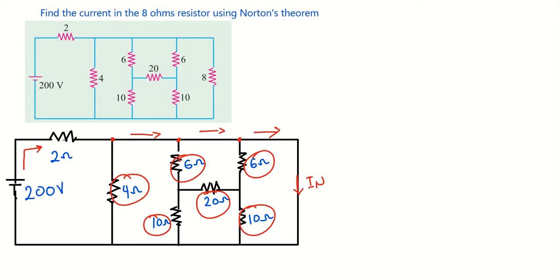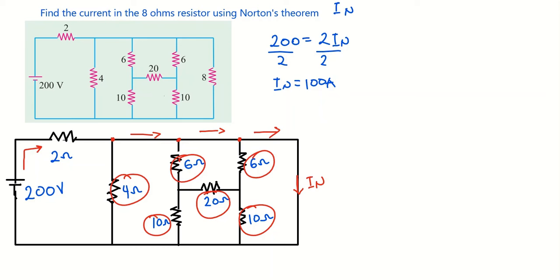To calculate the current in the circuit, we have 200 volts equal to the 2-ohm multiplying Norton's current. Dividing both sides by 2, we get Norton's current equal to 100 amperes.